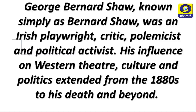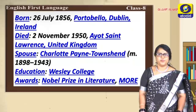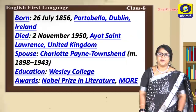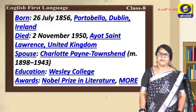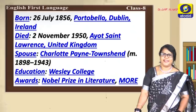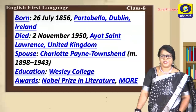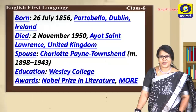George Bernard Shaw, known simply as Bernard Shaw, was an Irish playwright, critic, polemicist, and political activist. His influence on Western theatre, culture, and politics extended from the 1880s to his death and beyond. He was born on 26th July 1856 at Portobello, Dublin, Ireland. He died on 2nd November 1950 at Ayot St. Lawrence, United Kingdom. His wife was Charlotte Paine Townshend. His education was at Wesley College and he received the Nobel Prize in Literature among other awards. That's about the writer of the day.